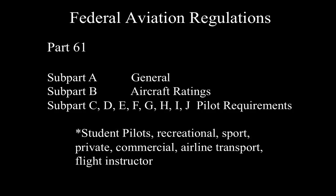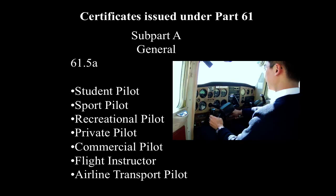The two sections you need to know most are Parts 61 and 91. Let's dive into Part 61 first. Each part is divided into subparts. Subpart A has miscellaneous definitions. Subpart B covers different types of ratings you can add to your certificate. Subparts C through J cover the different pilot certificates — student, recreational, sport, private, commercial, airline transport, and flight instructor.